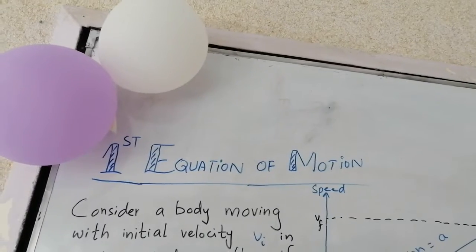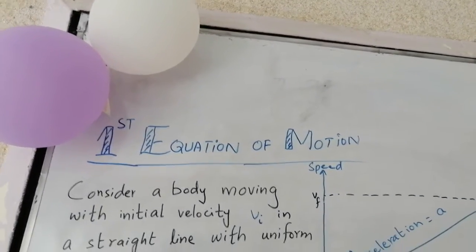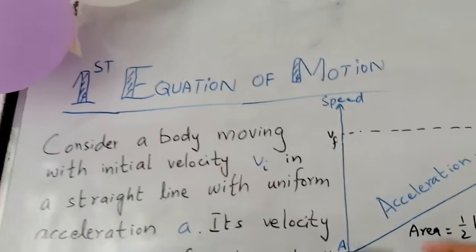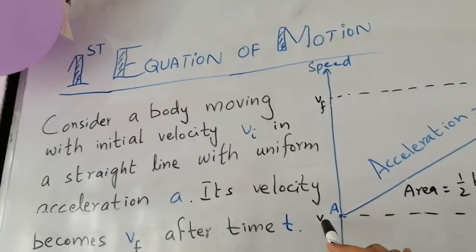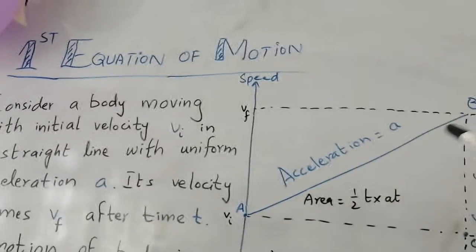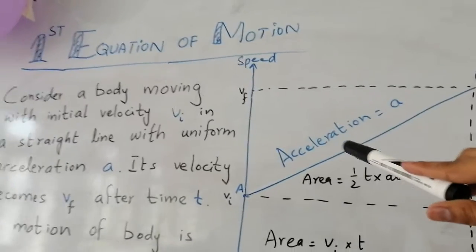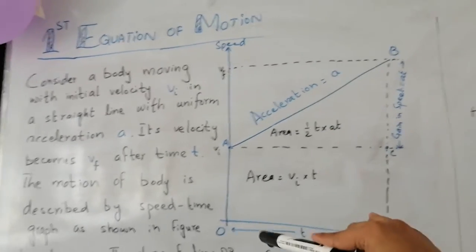For this we consider a body which is moving with initial velocity vi in a straight line. The straight line is here. The body is moving from point A and moving in a straight line with acceleration a, and at a certain time t.